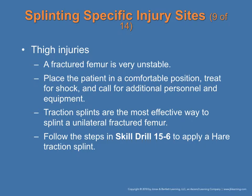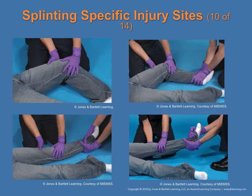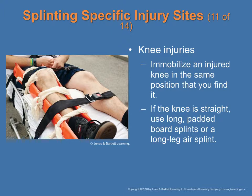For thigh injuries, a femur fracture is very unstable. Place the patient in a comfortable position, treat for shock, and call for additional personnel and equipment. Traction splints are the most effective way to splint a unilateral femur fracture. For knee injuries, an example is immobilizing the knee with a splint placed on the medial and lateral part of the leg, above and below the joint itself.